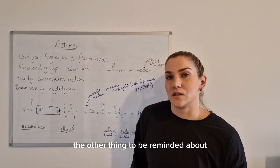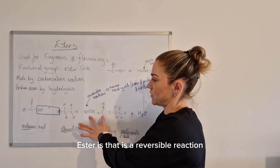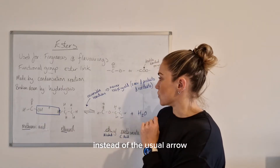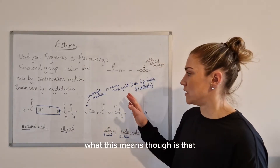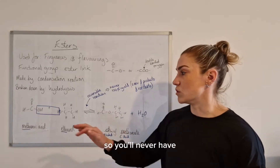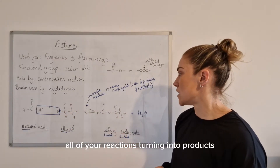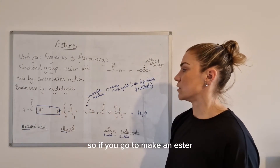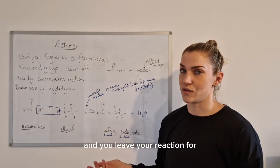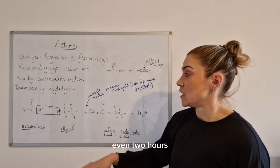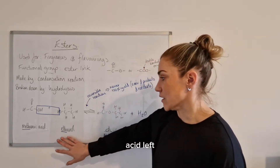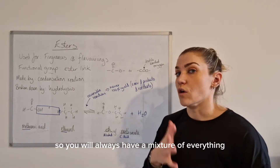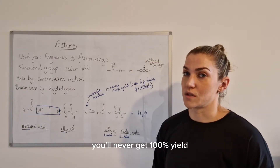The reaction to make an ester is reversible, so you'll see the reversible reaction sign instead of the usual arrow. This means you'll never get 100% yield — not all of your reactants will turn into products. At the end of the reaction you'll still have a mixture of everything: some methanoic acid, some ethanol, some ethyl methanoate, and some water.